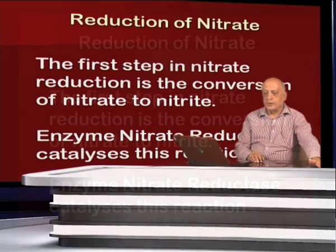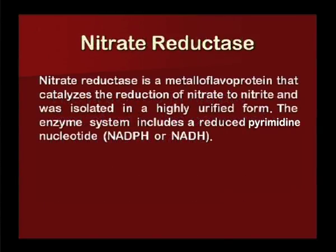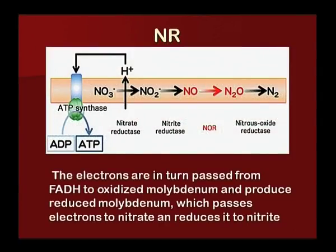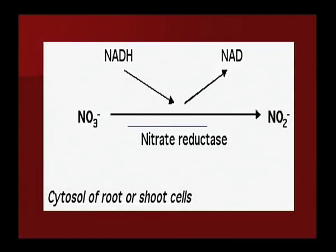The first step in nitrate reduction is the conversion of nitrate to nitrite, catalyzed by the enzyme nitrate reductase (NR). Nitrate reductase is a metalloflavoprotein that catalyzes this reduction and was isolated in highly purified form. The enzyme system includes a reduced pyridine nucleotide, NADPH or NADH. Nitrate is reduced to nitrite through nitrate reductase with the involvement of NADH, which is then converted back to NAD, providing the reductive potential for this reduction process.